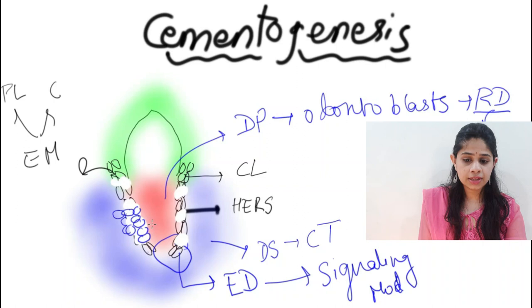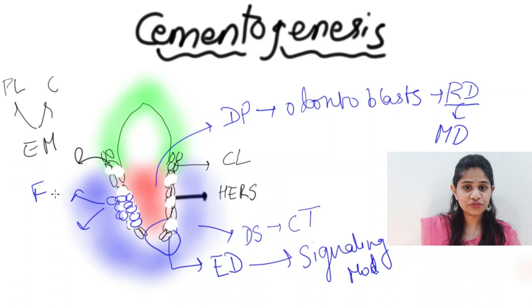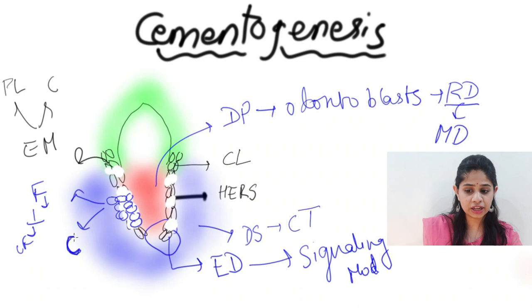The dental sac cells proliferate into two subtypes: fibroblast cells, which orient perpendicular to the root sheath and help in the formation of collagen fibers, and cementoblast cells, which orient parallel to the root sheath.